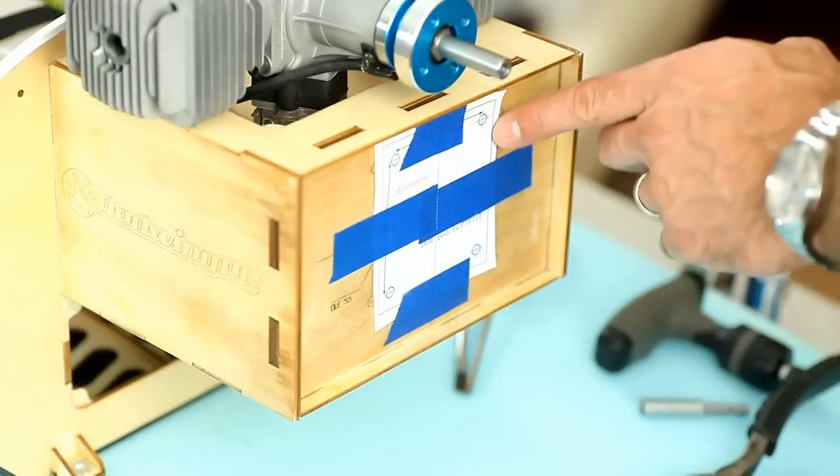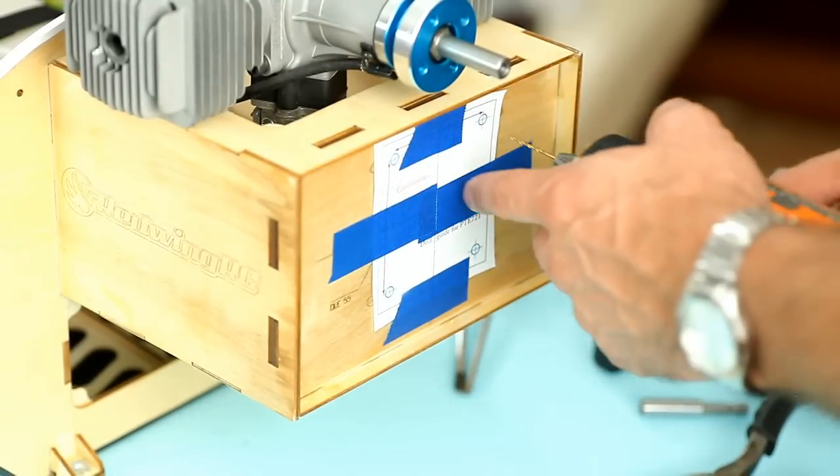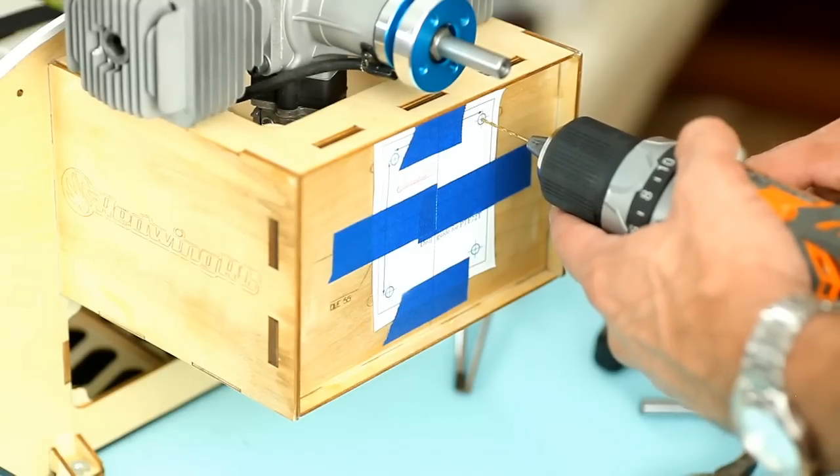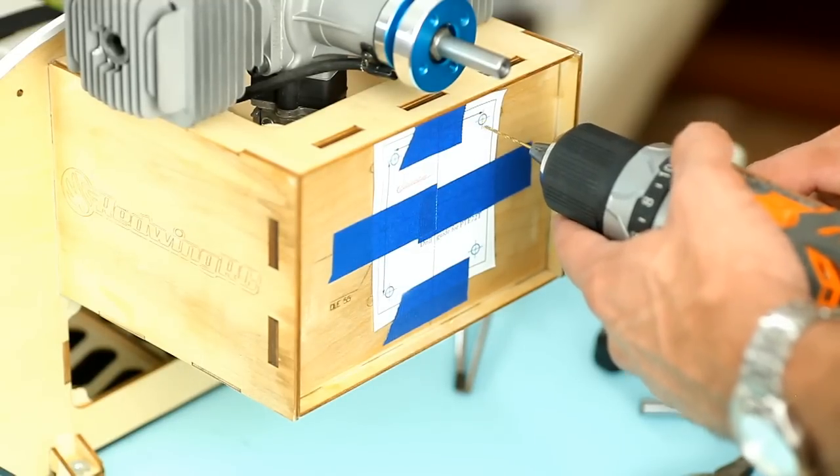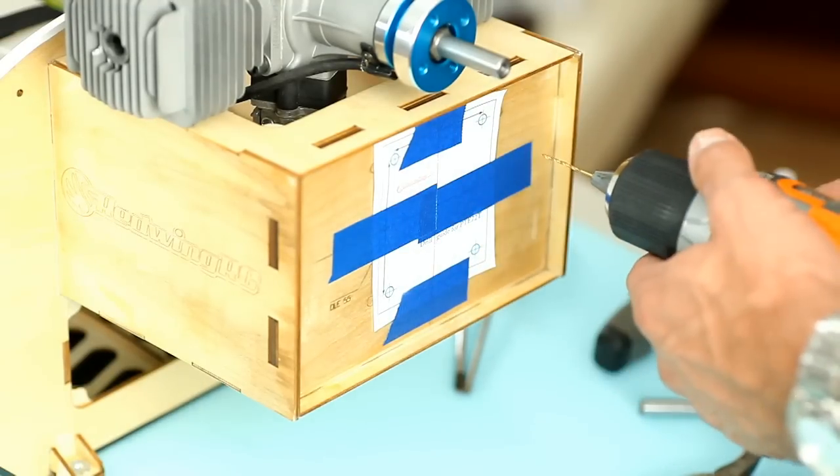Now that you have your template taped on and lined up, we're going to go ahead and start drilling out these holes. You want to start with a 1/16th inch bit so that you can remain very accurate, and then one step at a time, step it up to the next size until you get to your final thread size on the bolts you're using for your engine.